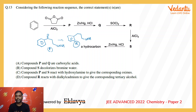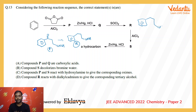Then Q is reacting with SOCl₂ to form R. That is, RCO-OH reacting with SOCl₂ to form RCO-Cl. R is then used in one more Friedel-Crafts acylation with AlCl₃, forming a CO⁺ acylium ion which attacks the benzene ring.